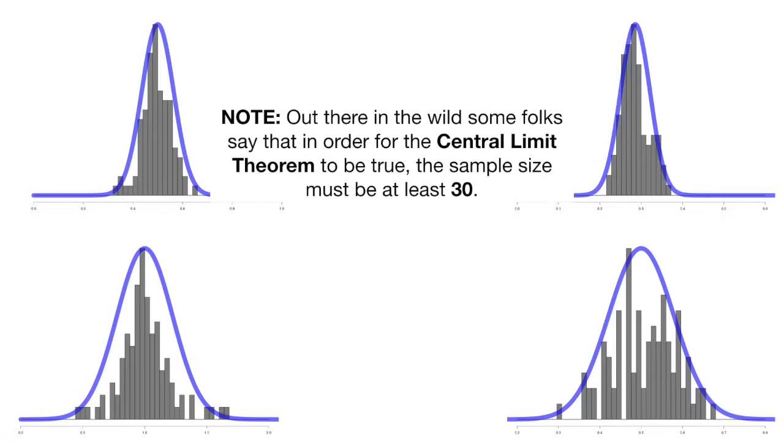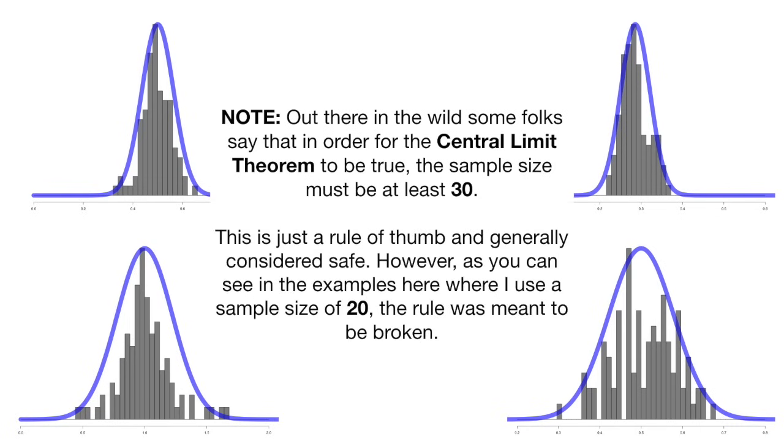Note, out there in the wild, some folks say that in order for the central limit theorem to be true, the sample size must be at least 30. This is just a rule of thumb and generally considered safe. However, as you can see in the examples here where I use a sample size of 20, the rule was meant to be broken.